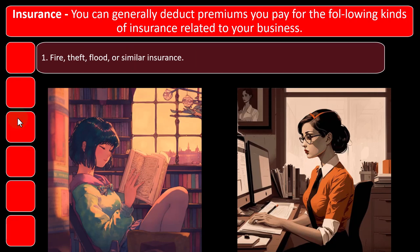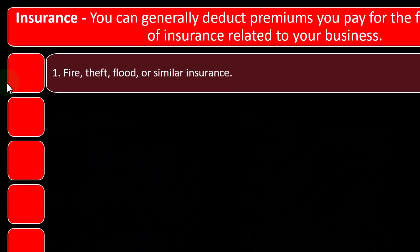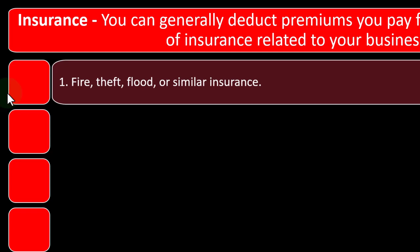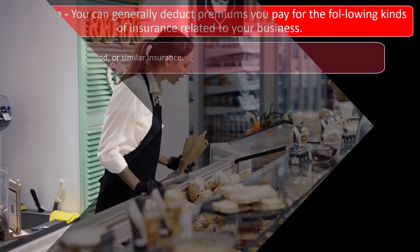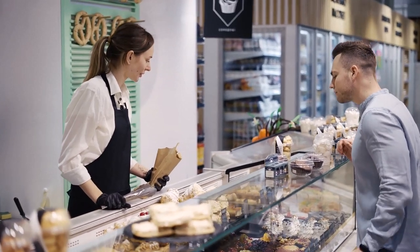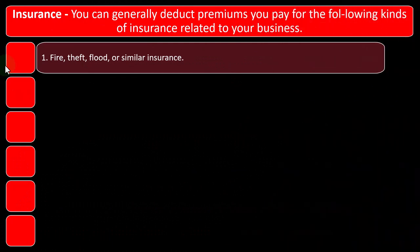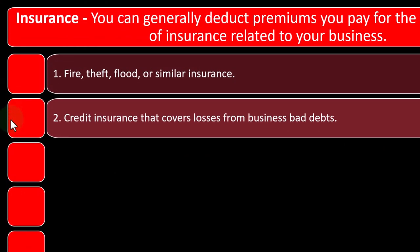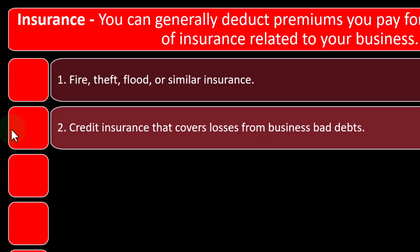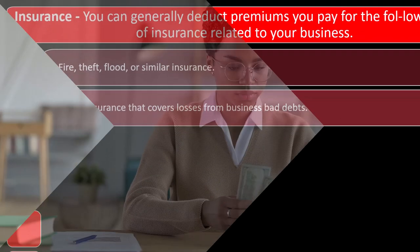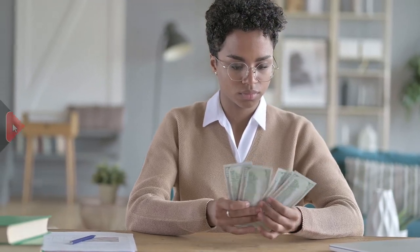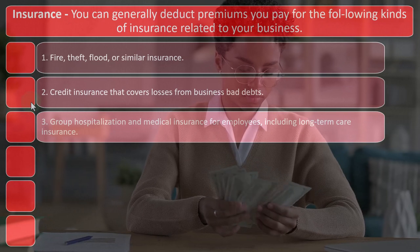Deductible types of insurance include: fire insurance, theft insurance, and flood insurance — these are specific to your industry. If you have a store with inventory, theft insurance is more important. Flood insurance may be specific to a particular location. Credit insurance covers losses from business bad debts — that's clearly a business-related insurance. Group hospitalization and medical insurance for employees, including long-term care insurance, is also deductible.